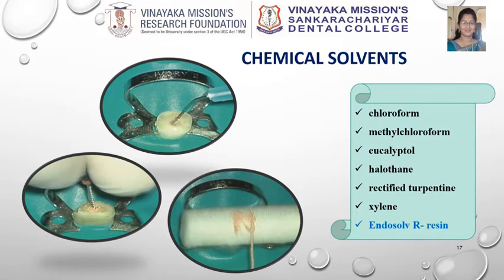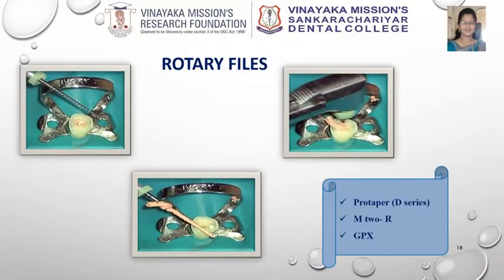Finally, many dedicated rotary systems are also available in the market specifically for GP removal, like the ProTaper D-Series, M2R system, and GPX system. These systems are designed in such a way that when operated, the gutta percha will adhere to the file and come out of the canal.